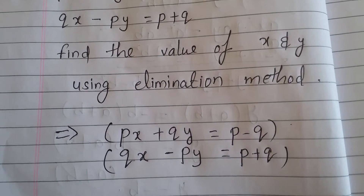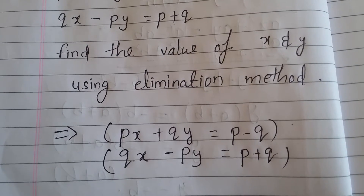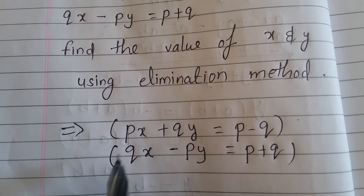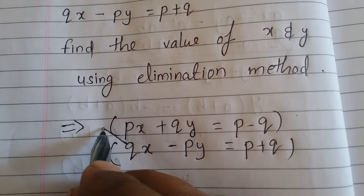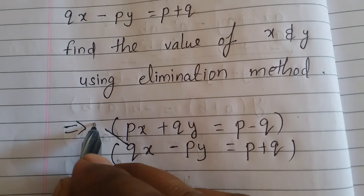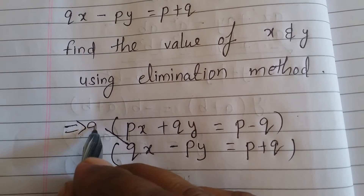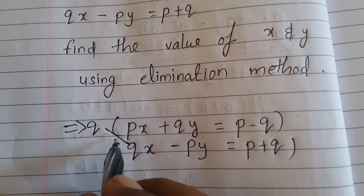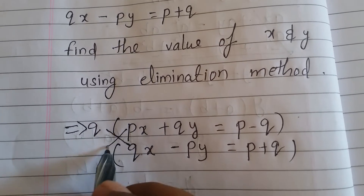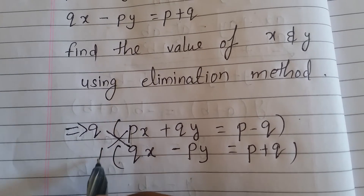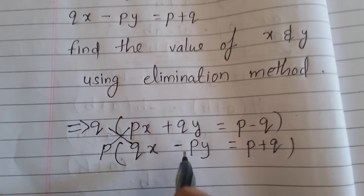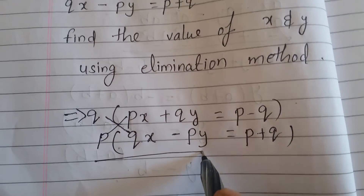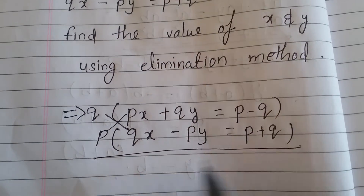We have to equate the coefficients of x. Multiply equation one by q and equation two by p, so both the coefficients of x will be equal.